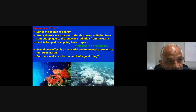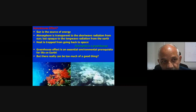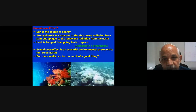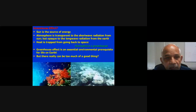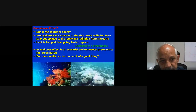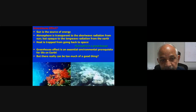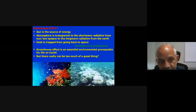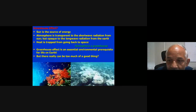The greenhouse effect: the sun is a source of energy, but the atmosphere is transparent to the sun's radiation while opaque to radiation emitted from the Earth's surface. If greenhouse gases are more, the heat that is supposed to go back to space gets trapped in our atmosphere. As a result, our local and atmospheric temperatures are increasing where we live. Greenhouse effect is an essential environmental prerequisite for life on Earth — otherwise temperatures would be at freezing level. But too much is bad, so we should minimize its projections.